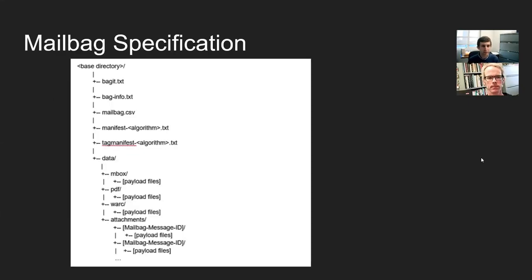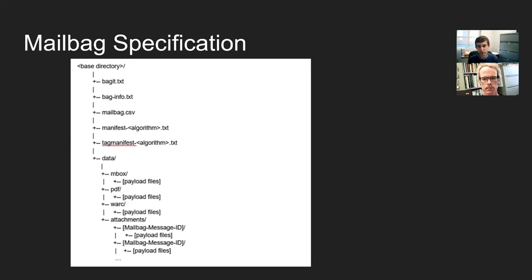Hi. I'm going to talk about what we came up with for the mailbag specification. This is an example of what it might look like — it'll look very familiar to anyone who knows BagIt. It's a mailbag — just a BagIt bag with some extra requirements. In the payload or data directory, there are specified subfolders for whatever formats you're using. If you have email represented in MBOX, PST, PDF, or WARC, those are the subfolder names. There's also an attachments subdirectory where all email attachments can be stored optionally. The only other requirement is a mailbag CSV tag file.